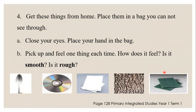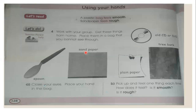Get these things from home and place them in a bag you cannot see through: a spoon, a CD or DVD, a sheet of paper, a tree bark, and a scotch brite or scour pad — or maybe sandpaper. Put all these items in the bag, then close your eyes and place your hand in the bag. Pick up and feel one thing at a time, then say how it feels — is it smooth or is it rough? This is the page you're working from, page 128.